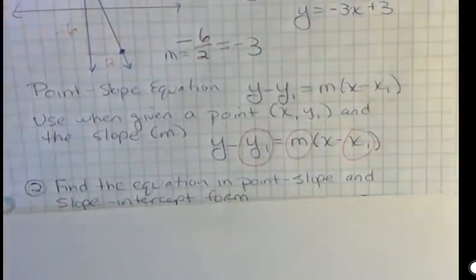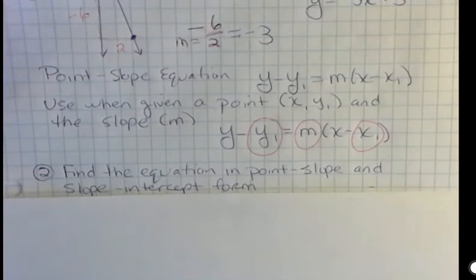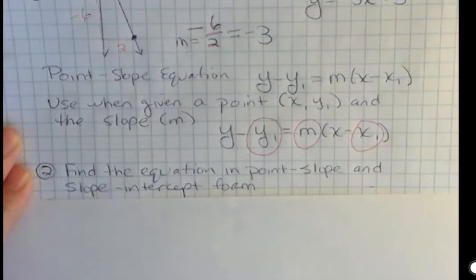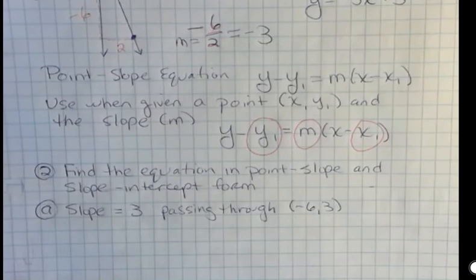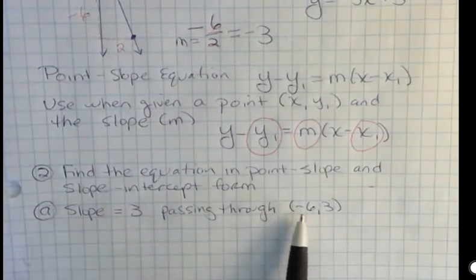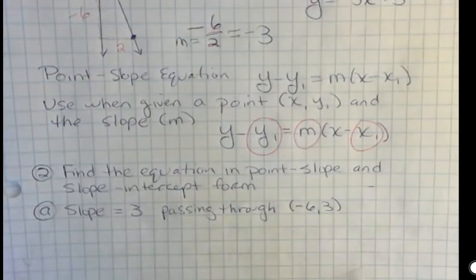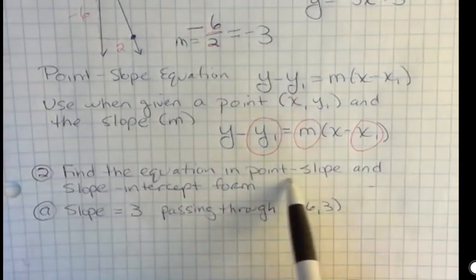Okay. So this example is then find the equation in point-slope and in slope-intercept form. So we want both of those. And we're going to be given, in this first one, we're given that the slope is three and it's passing through negative six, three. So I'm going to start with the point-slope equation.